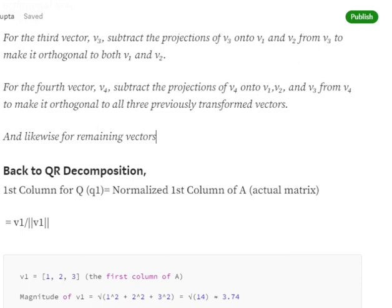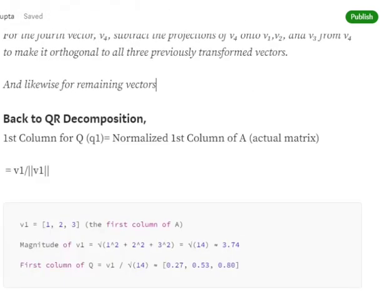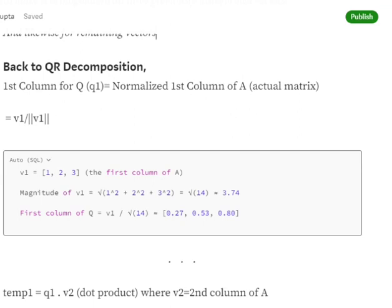We already have taken our matrix A: 1 4 7, 2 5 8, 3 6 9. Now for the first column of Q, that is q1, we're normalizing the first column of A. For the first vector v1, there is nothing to make it perpendicular to; we will just be normalizing it. v1 equals 1 2 3. We are calculating the magnitude of v1: 3.74. First column of Q, q1, equals v1 divided by 3.74, which is 0.27, 0.53, 0.80.